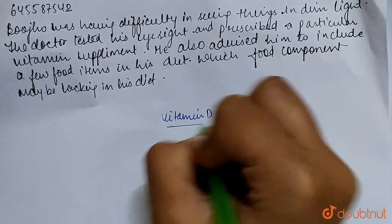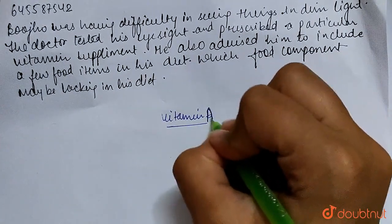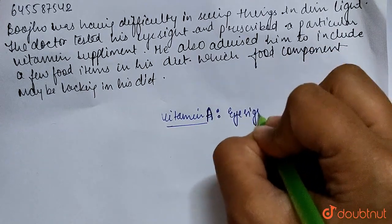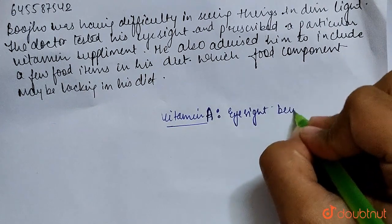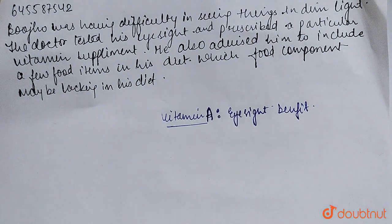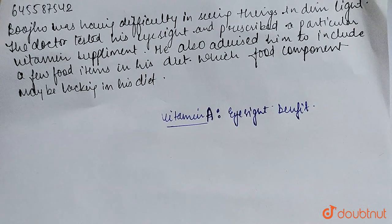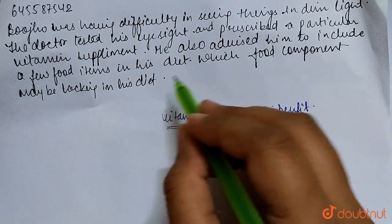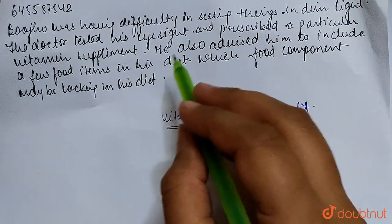Basically, Vitamin A is important for maintaining our eyesight. If our body has a deficiency of Vitamin A, our eyesight becomes weak. So we need to take supplements and include food components that are rich in Vitamin A.